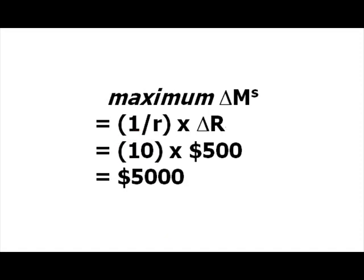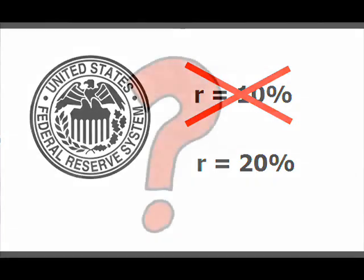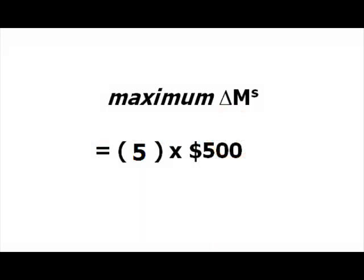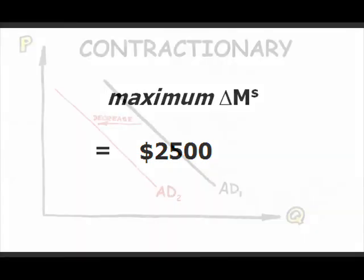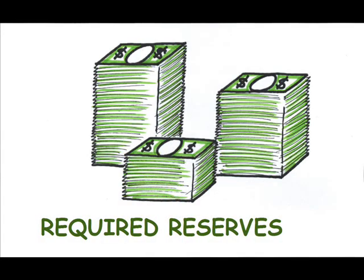What if the Fed increases the required reserve ratio to 20%? According to the Monetary Control Act of 1980, the Fed has only allowed a range from 8% to 14%, but let's use 20% hypothetically. With a required reserve ratio of 0.2, the multiplier is now 1 over 0.2, or 5. So the maximum change is 5 times $500, or $2,500. This means that raising the reserve requirement is contractionary monetary policy, since the overall possible change is half what it was before, slowing the economy. A higher reserve ratio means that banks are legally required to hold onto more reserves, leaving less to lend out.